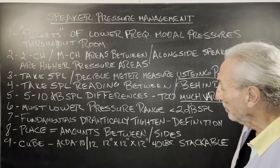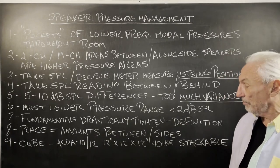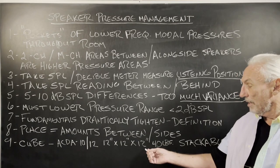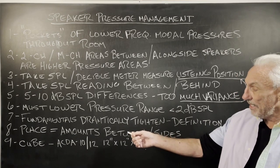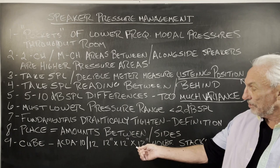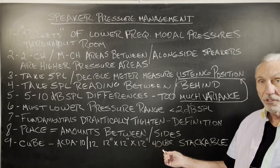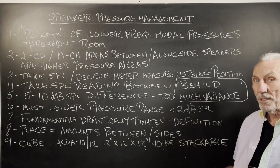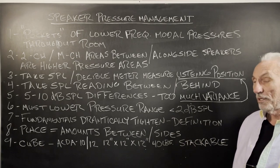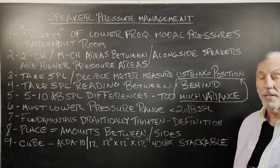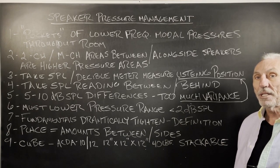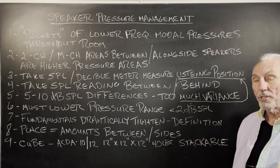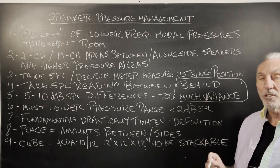Our Cube technology was created on that basis. It's on our website. Small ACDA 10 and ACDA 12 modules - 12 by 12 by 12, 40 pounds, stackable. Put them behind your speakers, between your speakers, you're going to hear huge differences. You're going to see 3 to 6 dB, depending on surface area coverage - 3 to 6 dB improvement in resolution below 100 hertz is huge.